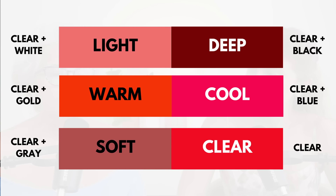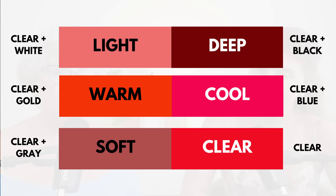This doesn't happen in every instance, but this is the majority of the time. When you want to make the clear color suitable for someone who is predominantly warm, you add gold. When you want to make the red cooler for somebody who's cool, you add blue. And if you want to soften it, you add gray. This first chart shows you how the clear red color changes as it is embraced by each of these dominant characteristics.